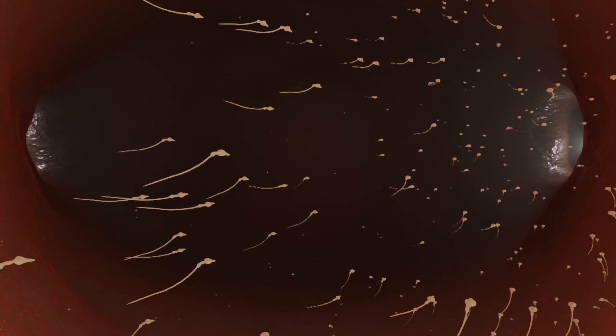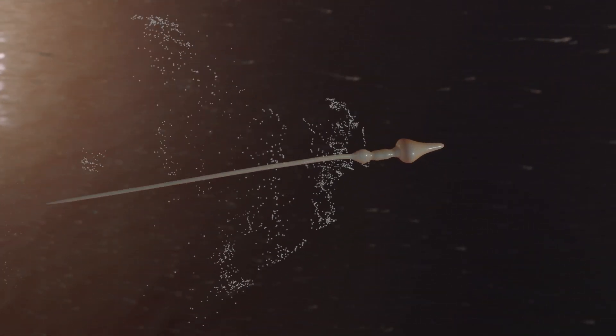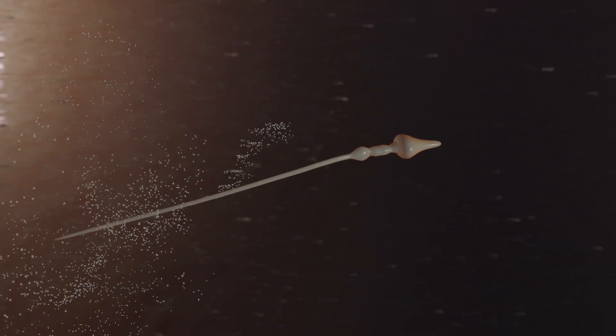On their way, the sperm undergo the final maturation step known as capacitation. During this process, the protein layer surrounding the sperm is dissolved, which is essential for fertilization to occur. This maturation step also causes the male germ cells to become hyperactive.